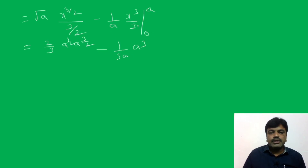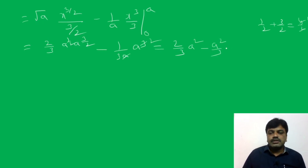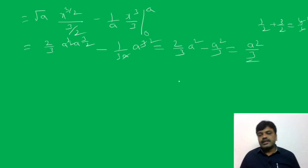Substituting the upper limit x = A: the first term gives (2/3) · √A · A^(3/2) = (2/3) · A^(1/2) · A^(3/2) = (2/3)A². The second term gives (1/3A) · A³ = A²/3. The lower limit gives 0 for all terms. Therefore, A equals (2/3)A² − A²/3 = A²/3. The area of the bounded region is A²/3.